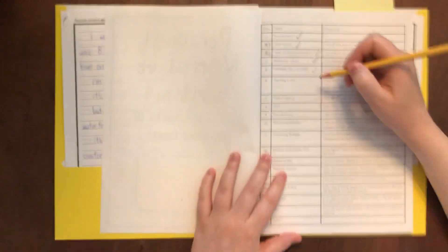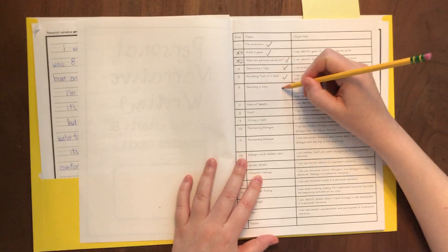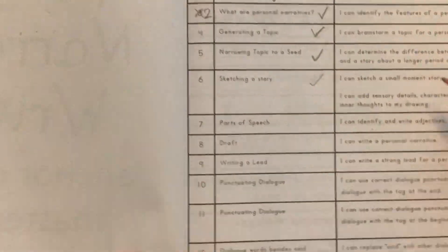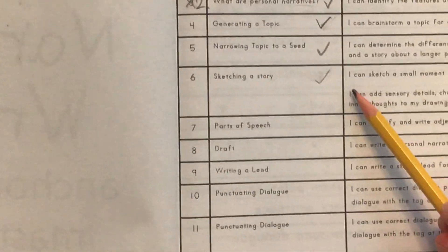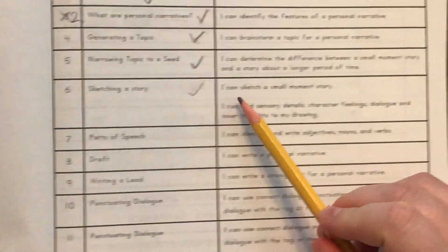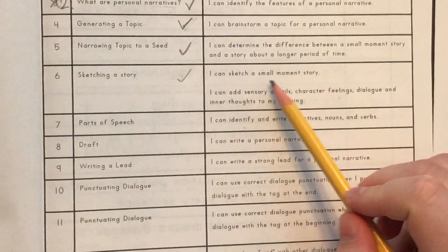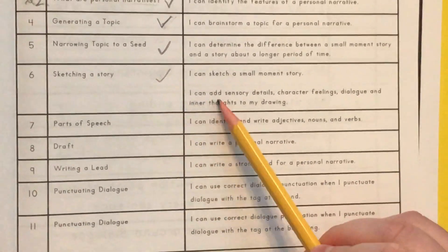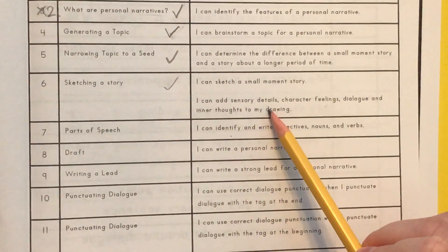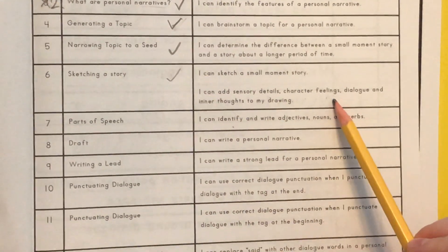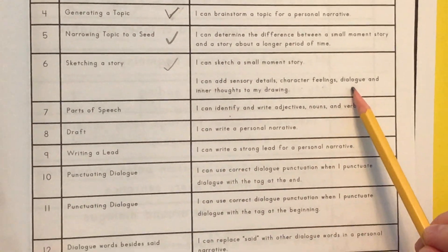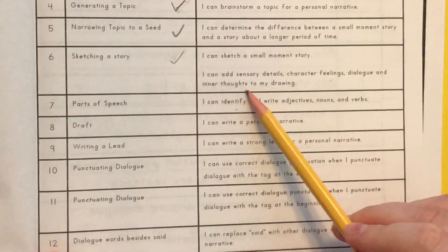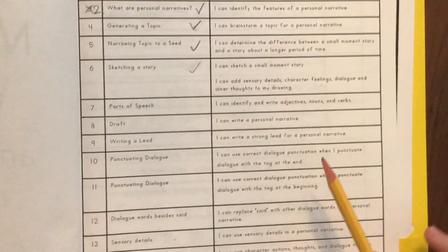Hi second graders, today we're doing lesson six: sketching a story. The objectives are: I can sketch a small moment story, and I can add sensory details, character feelings, dialogue, and inner thoughts to my drawing.